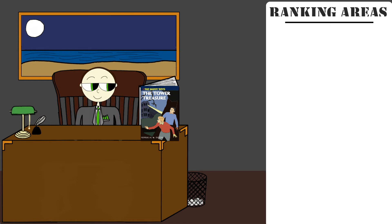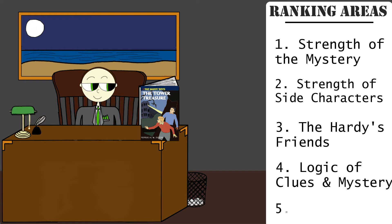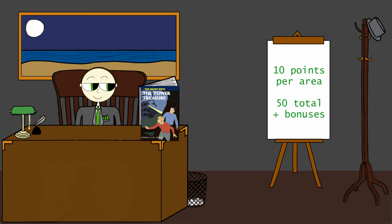Before we get into the book, I'm going to quickly go over how the ranking system works. To help rank the books based on more than personal preference, I'll be looking at 5 key categories. Strength of the Mystery, Strength of Side Characters, The Hardy's Friends, Logic of the Mystery & Clues, and Realness of the Novel. Each category can have a maximum score of 10 points, for a total maximum score, before bonuses, of 50.